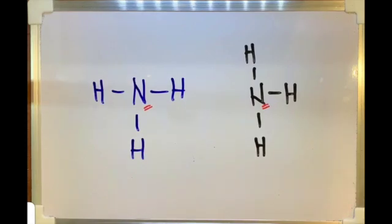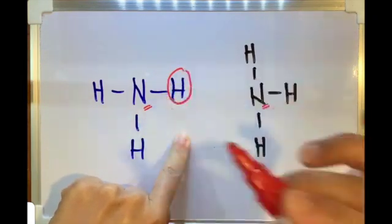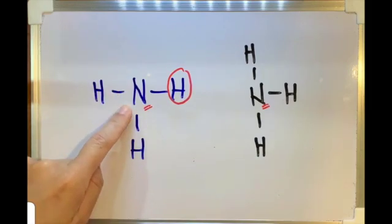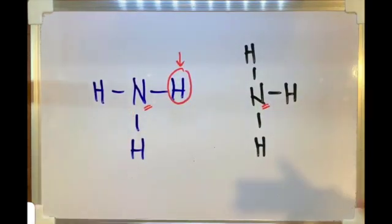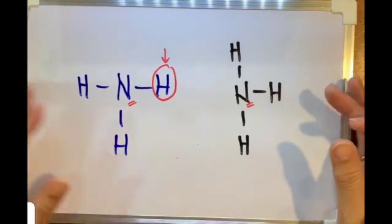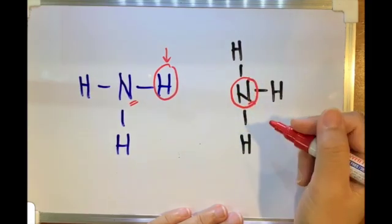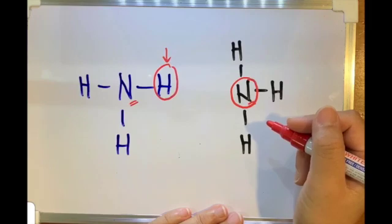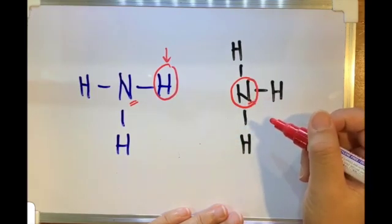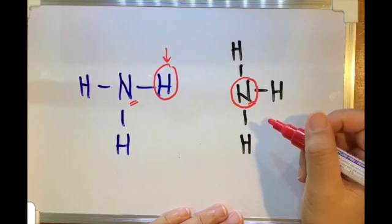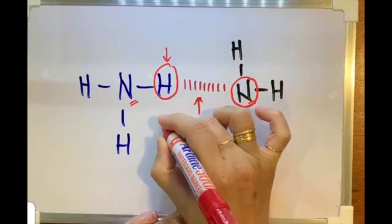So where is the location of the hydrogen bond? Look at molecule number one: there is one hydrogen atom bonded to the highly electronegative nitrogen atom, so this hydrogen atom is ready for formation of a hydrogen bond. In the second molecule, we see a nitrogen atom which is highly electronegative and bonded to hydrogen. So this nitrogen atom is ready for the formation of the hydrogen bond. Here is the location where the hydrogen bond is formed.